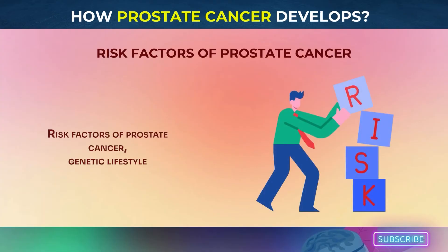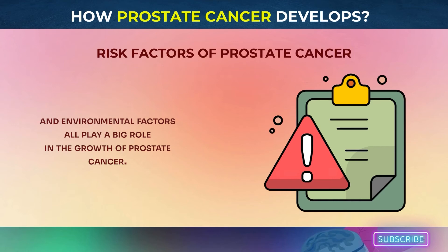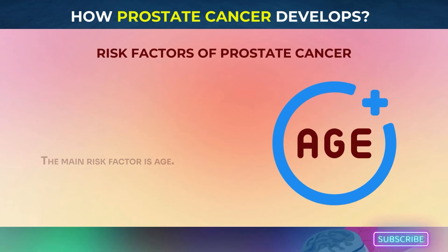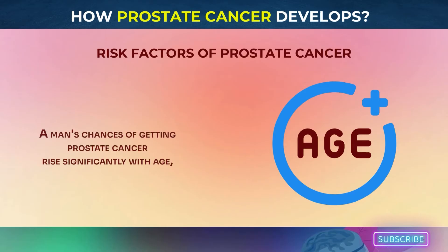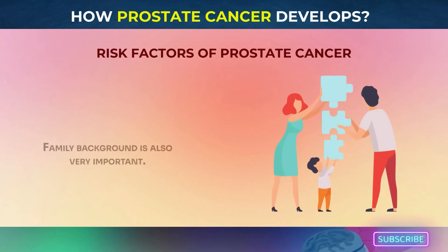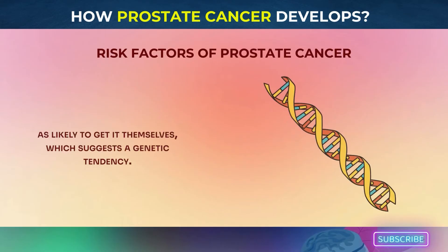Risk factors of prostate cancer: genetic, lifestyle, and environmental factors all play a big role in the growth of prostate cancer. The main risk factor is age. A man's chances of getting prostate cancer rise significantly with age, especially if he is over 50. Family background is also very important. Men whose father or brother has had prostate cancer are twice as likely to get it themselves, which suggests a genetic tendency.